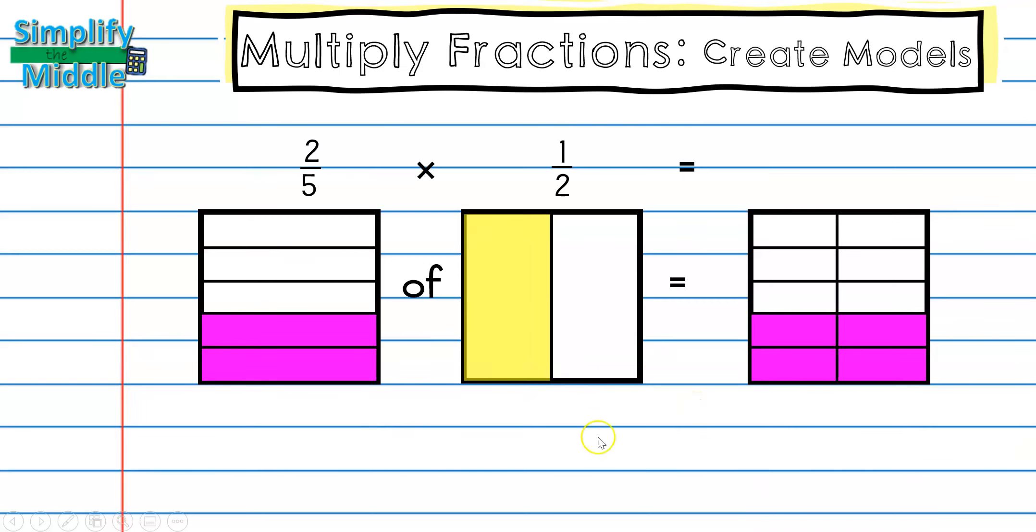And remember I'm shading one column, so ignore the rows, just look at one, two columns. I want to shade one of them. Here I can see I have two pieces out of a total of ten, so two-tenths is my answer.